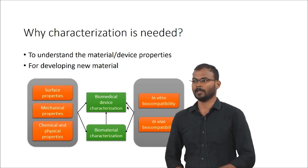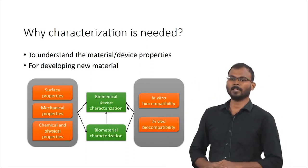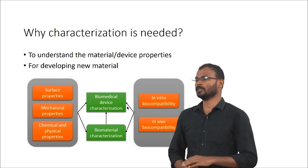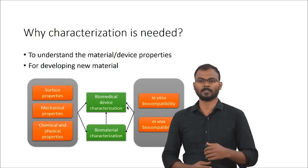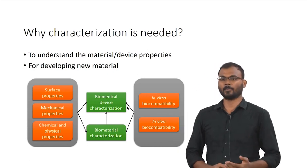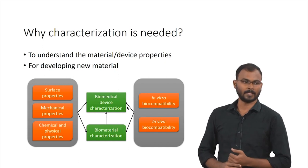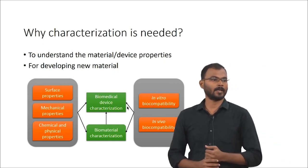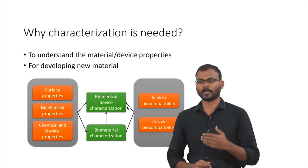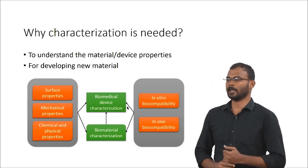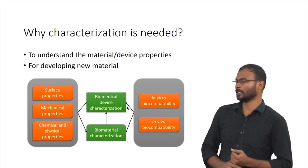Good mechanical properties can be understood by characterizing the bulk properties of the material using mechanical characterization. Physical and chemical properties involve understanding the material composition, thermal properties, and — if you are using a scaffold for tissue engineering — the porosity, permeability, and water uptake capacity. Those properties come under chemical and physical properties.